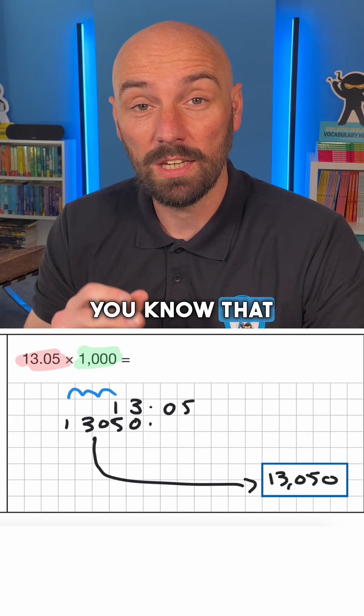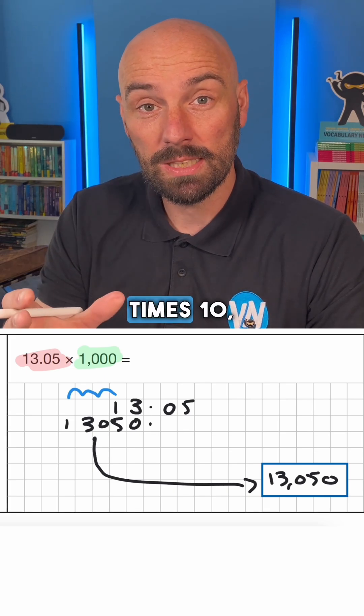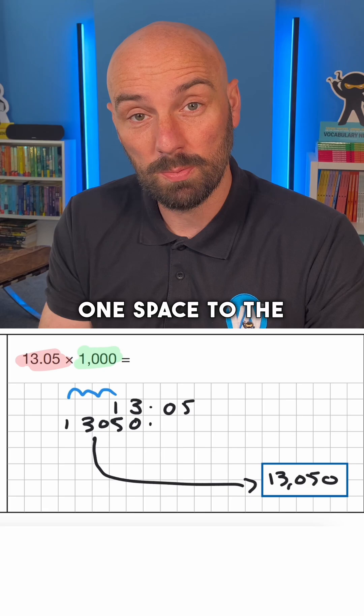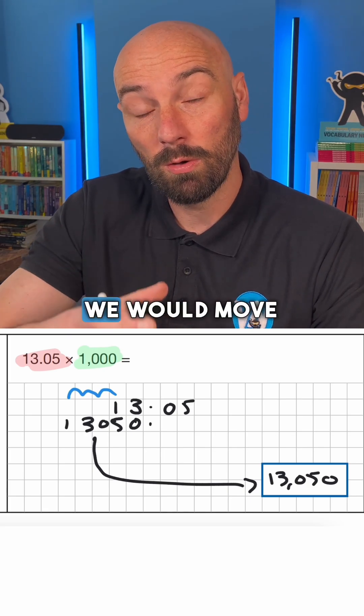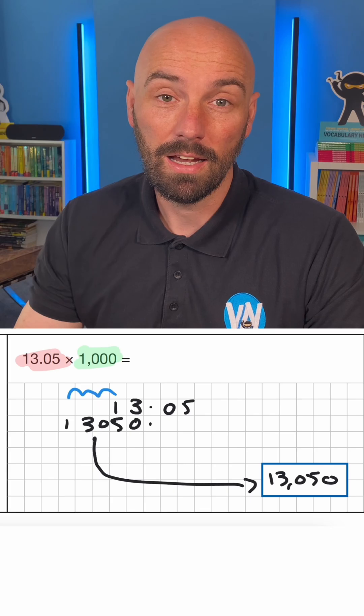That's very simple. And hopefully you know that you can do that for division as well. Divide by ten, we would move one space to the right. Times by a hundred, we would move two place values to the right, and so on.